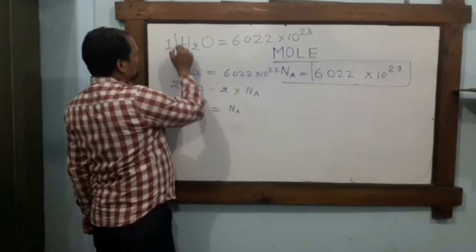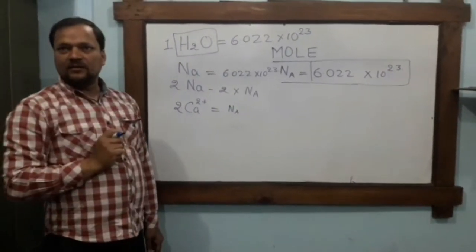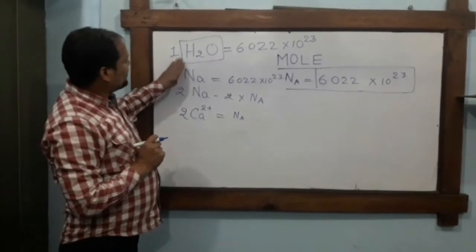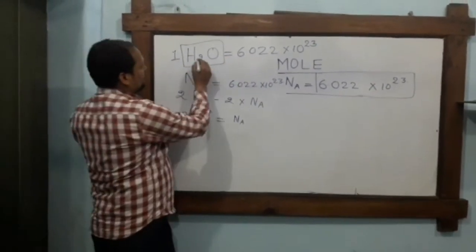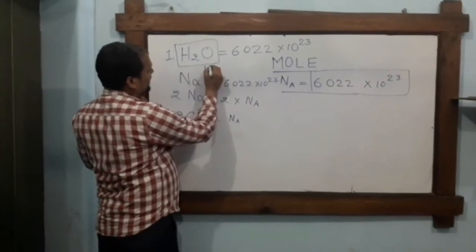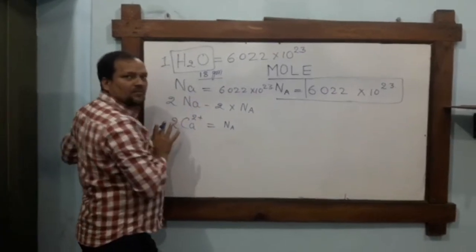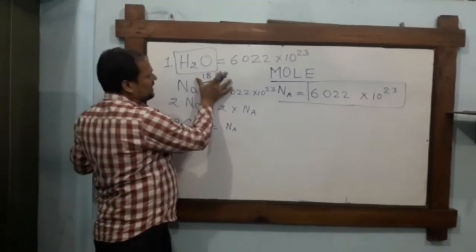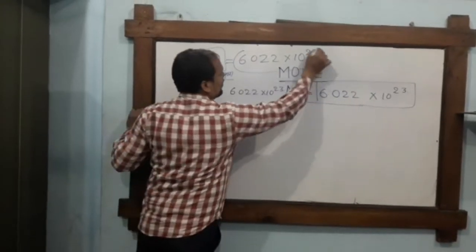Now, to understand molar mass: if we have one mole of water molecules, we calculate the mass as 18 grams. This is the simple meaning in chemistry - 18 grams represents one mole of water molecules.